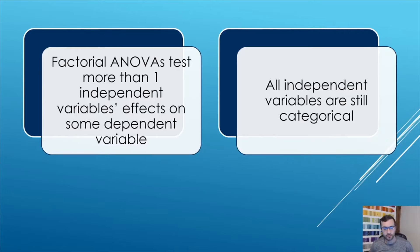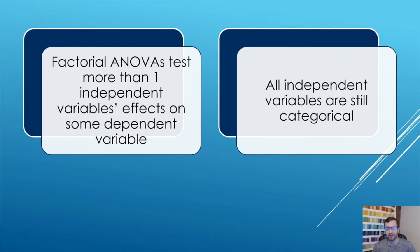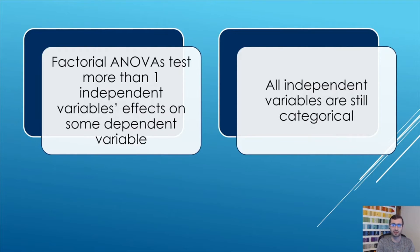A factorial ANOVA differs from a traditional one-way ANOVA in that it has more than one independent variable. Importantly, all of these independent variables are still going to be categorical — it's just that there's more than one now. So we test the effects of each one separately, and we're also able to test the combined effects of those independent variables.